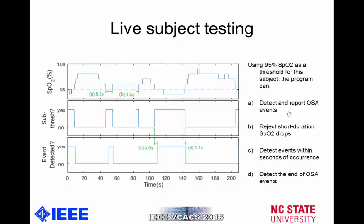How do we know the functionality is there? Because we tested it with a live subject. What we have in this figure is information from a test subject who we attached an artificially high threshold to. The top graph shows the patient's SpO2 data, which we had them manipulate by breathing in a particular way. The middle graph shows our threshold flag, determining whether or not the SpO2 values were at or below that threshold for what might be an apnea event. The bottom graph shows whether or not the information had been below the threshold long enough to actually be an apnea event — so the bottom graph is what actually shows if an apnea event is occurring or not.